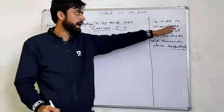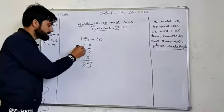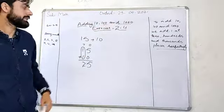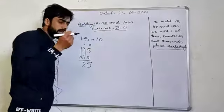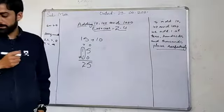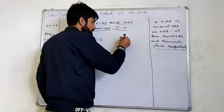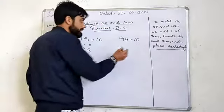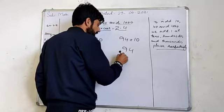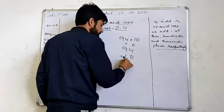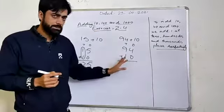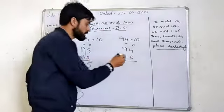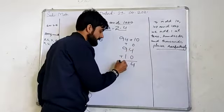We have to add at the 10, 100, and 1000 place. In another example, we have the number 94. If we add 10 to 94, we look at the 10s place. So 4 plus 0 equals 4, and 9 plus 1 equals 10. So we carry over to the 100s place.